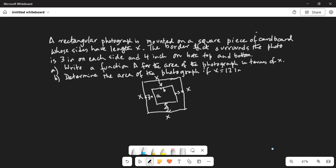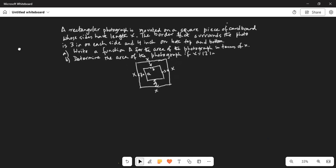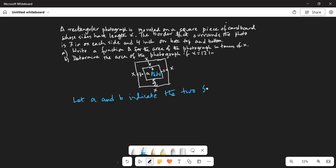So you can reduce this a little bit and then move this. Okay, so let a and b indicate the two sides of the photograph.